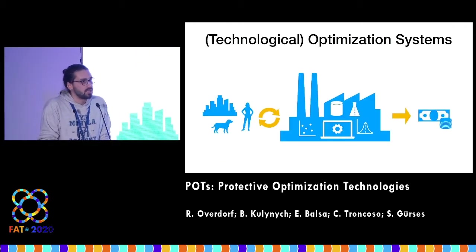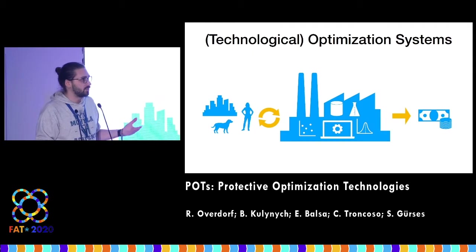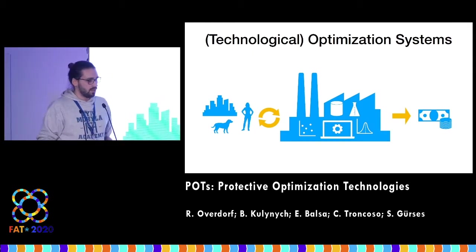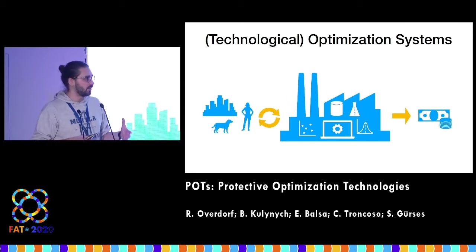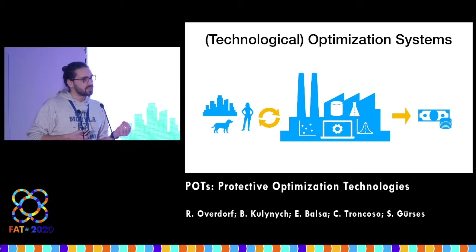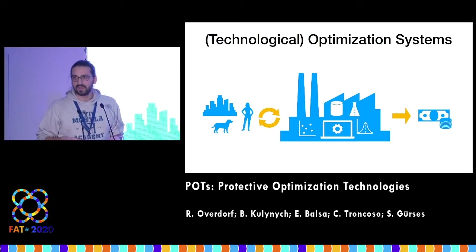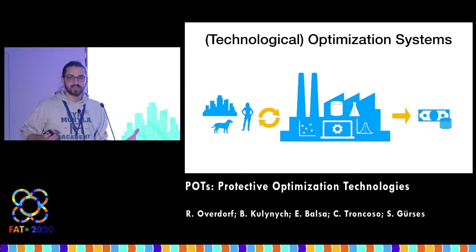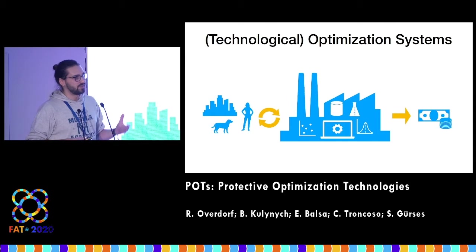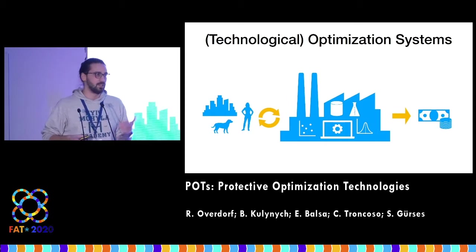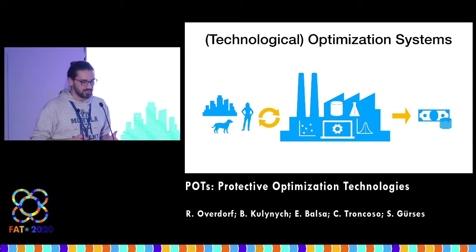In the FAccT community, we talk a lot about algorithmic decision-making systems. What I'd like to talk about now is something slightly different — what we call optimization systems. These are socio-technical systems that operate under the logic of optimization; that is, they optimize some metric over their environments in order to extract maximum value out of these environments using technology. I'm going to show you some examples.